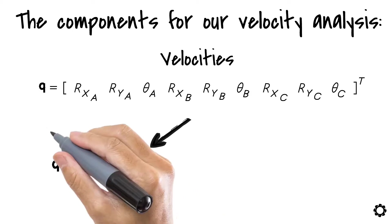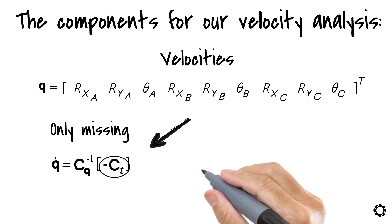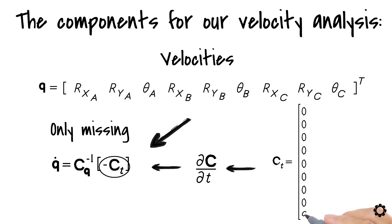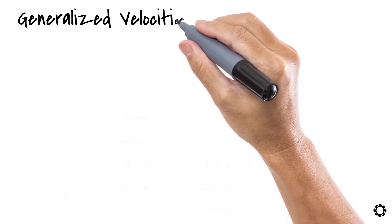We notice that we are only missing vector ct, which is the vector of constraints differentiated with respect to time. In this case, this vector can be written as follows. The generalized velocities are...